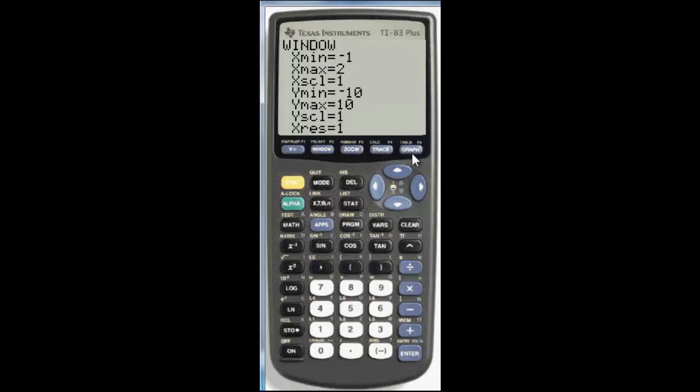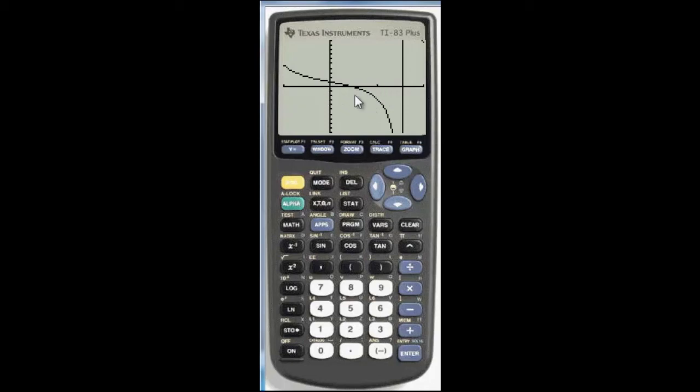Now, go back to the graph, and you can see that we have one zero in the interval from 0 to 1. And that's what we're wanting to find.